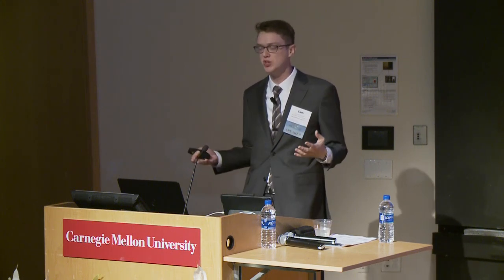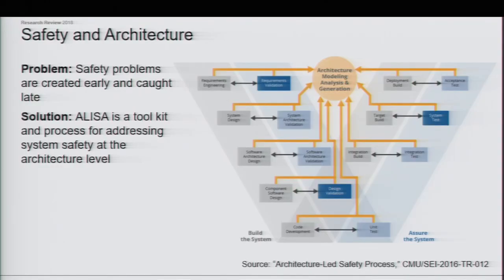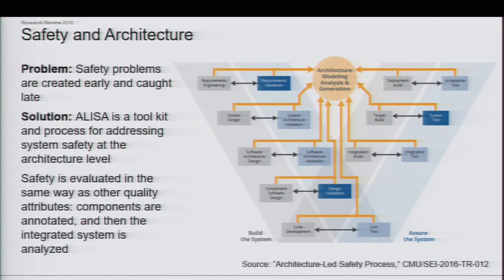There are a number of analyses that can be run on AADL models: the standard set of quality attributes like cost, power consumption, and weight, but also more complicated attributes like safety. A couple of years ago, we looked at how safety can be integrated throughout the lifecycle instead of bolted on at the end. The solution was a process and toolkit called ELISA, which lets us address system safety at the architecture level by integrating requirements engineering and assurance throughout the development lifecycle. Instead of having your system requirements in a Word document, they can be in a machine-readable language linked to specific parts of the architecture responsible for meeting those requirements.